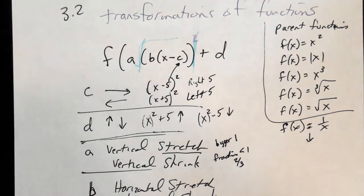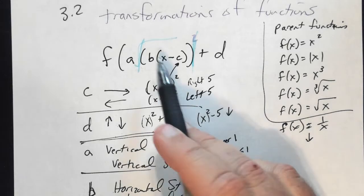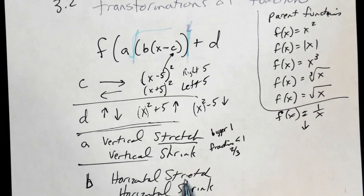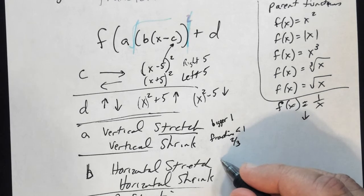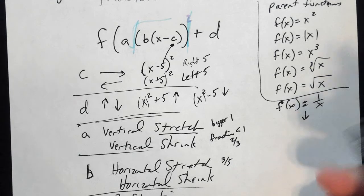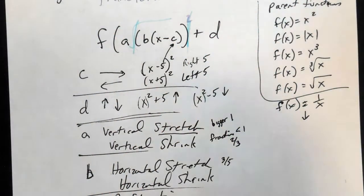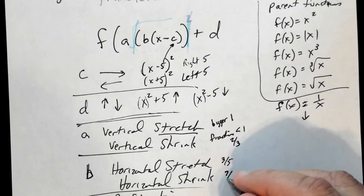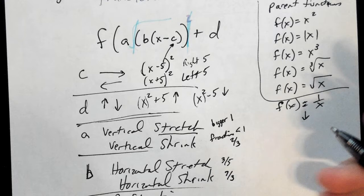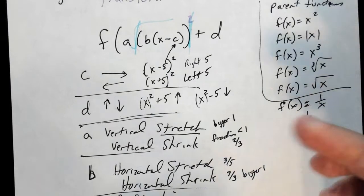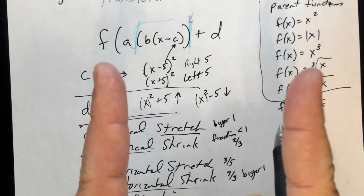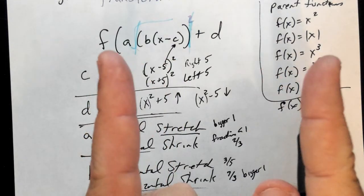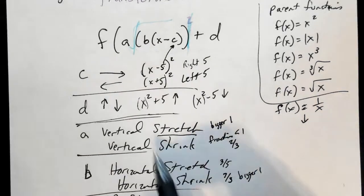The B value controls horizontal stretch or shrink. If B is a fraction like three-fifths, it's a horizontal stretch — it pulls the picture sideways. If B is a number greater than 1, like 7/3, it's a horizontal shrink — think of a marshmallow being squeezed. A horizontal shrink looks a lot like a vertical stretch.